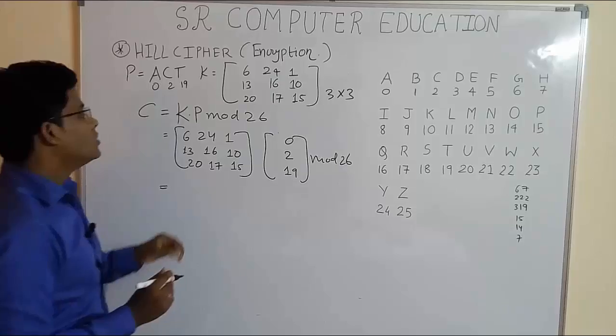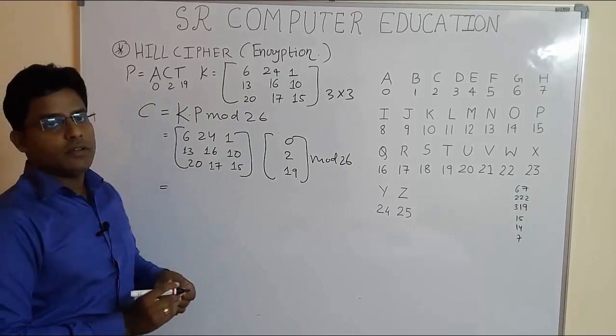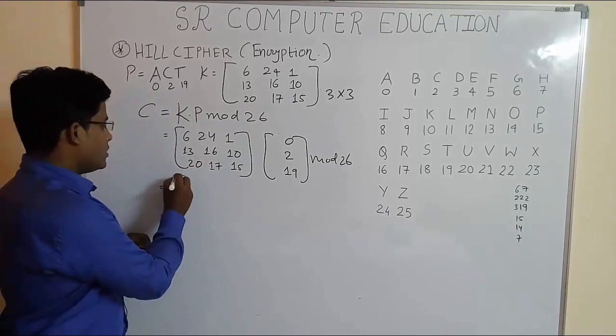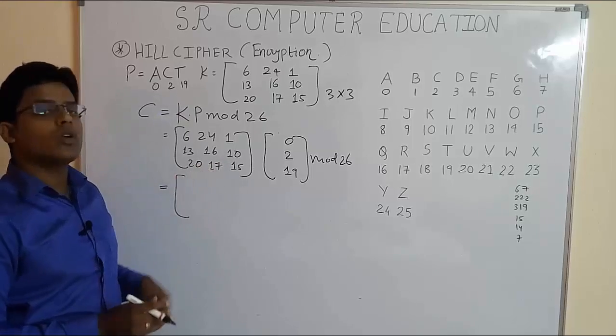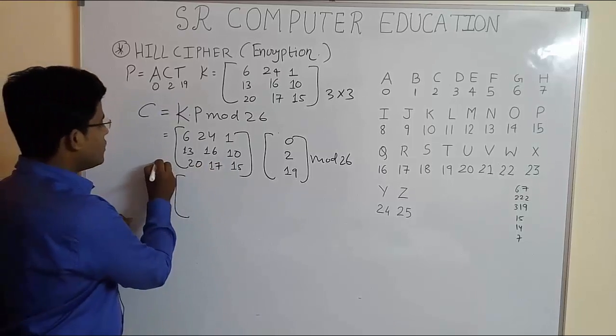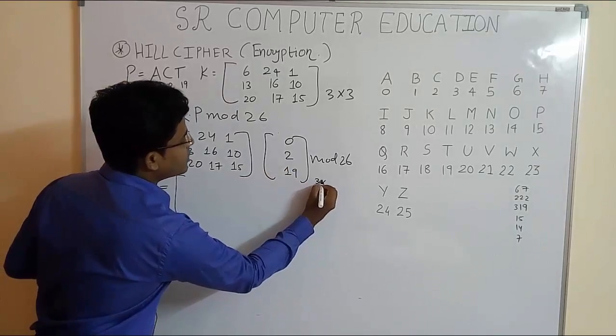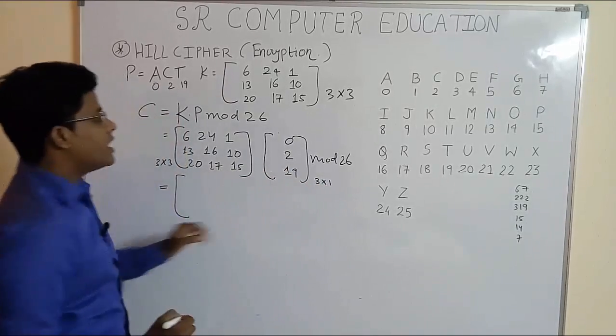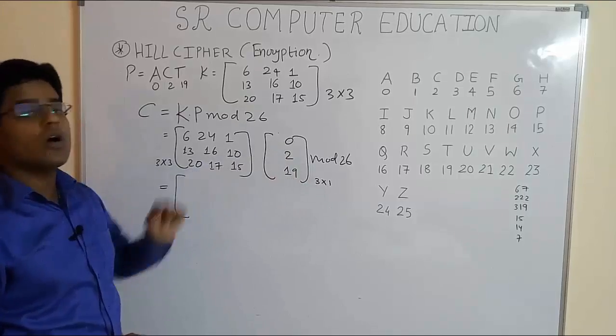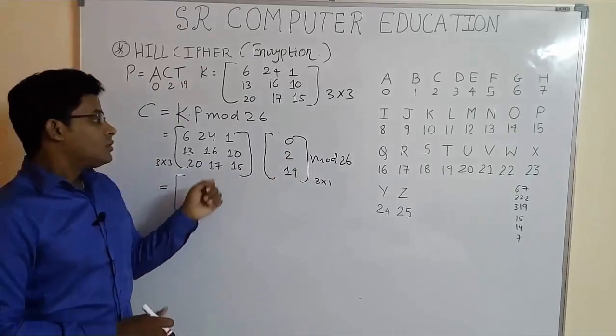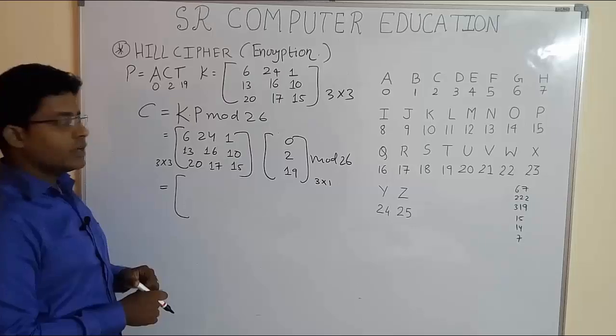Now you have to do matrix multiplication. In the previous video it was 2×2, but now the given matrix is 3×3 and this matrix is 3×1, meaning three rows and one column. Let's see how to do the matrix multiplication.